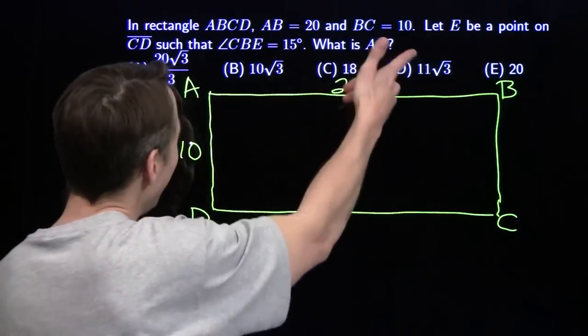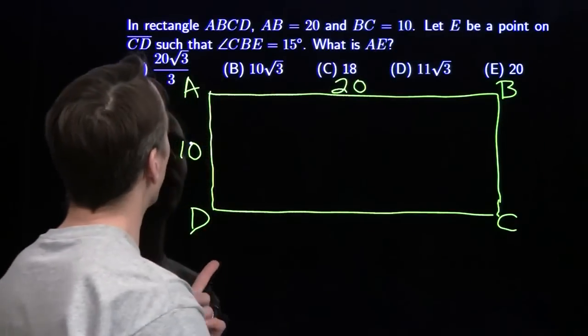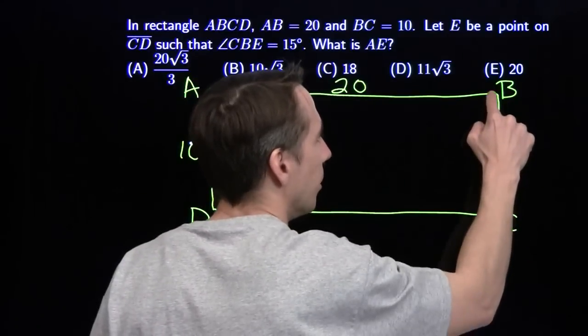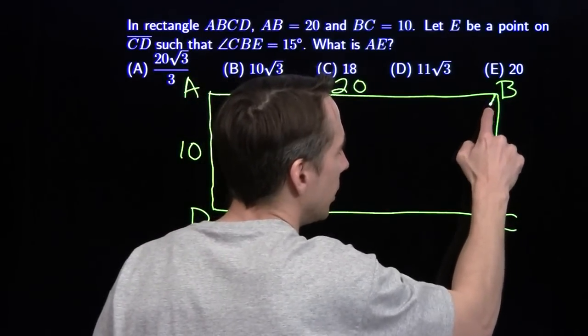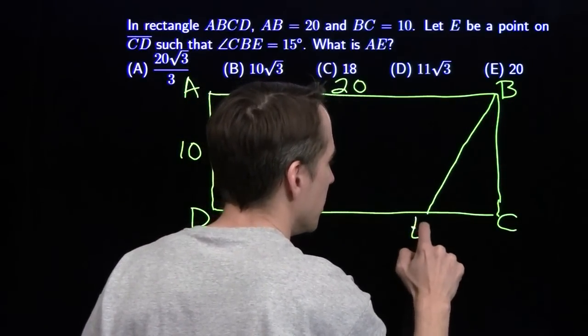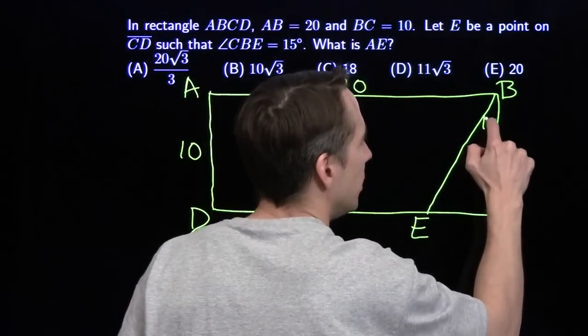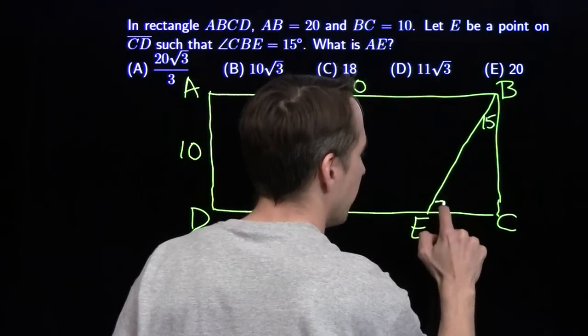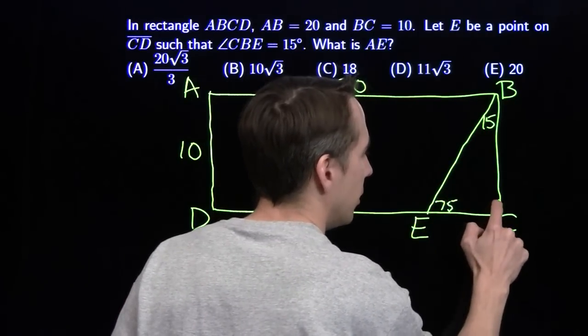Now we've got point E. That's on CD down here somewhere. So the angle C, B, E is 15 degrees. It's 15 right up there. It tells me this down here is 75. And this is the right angle.